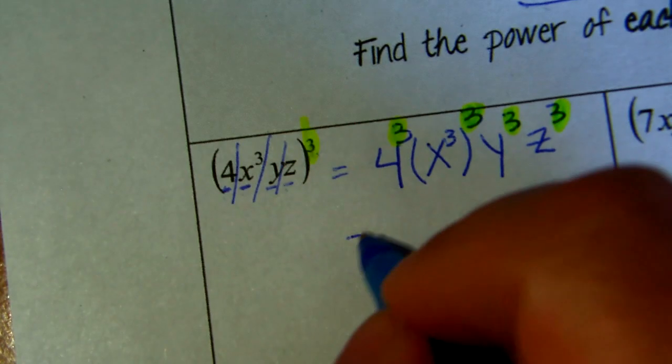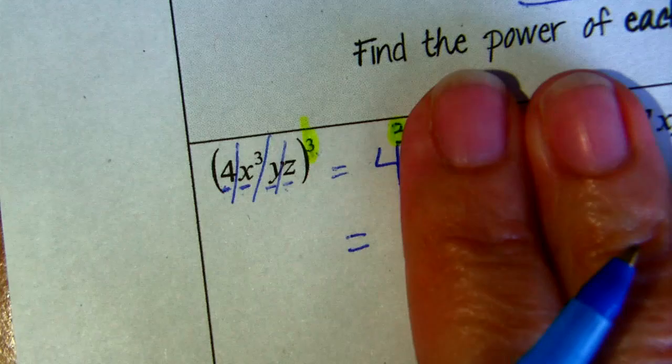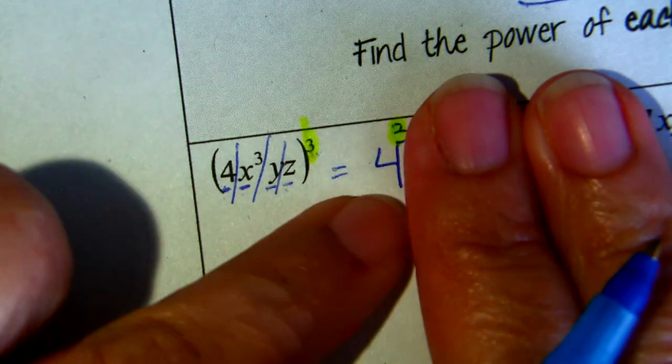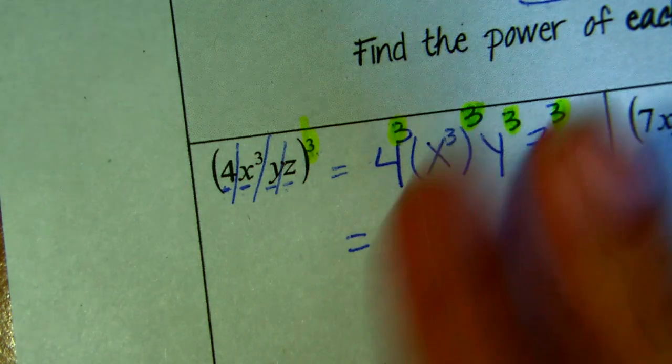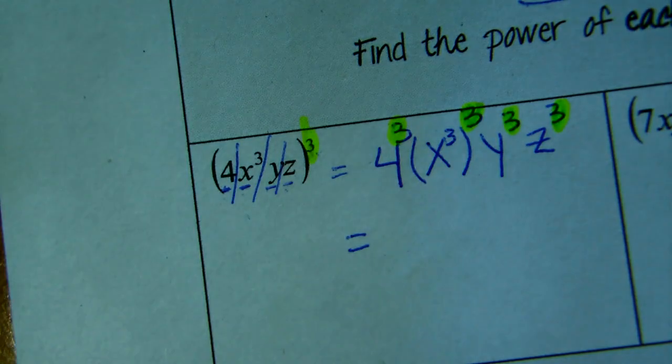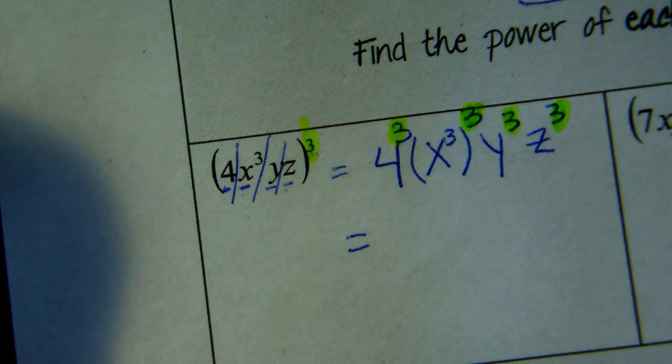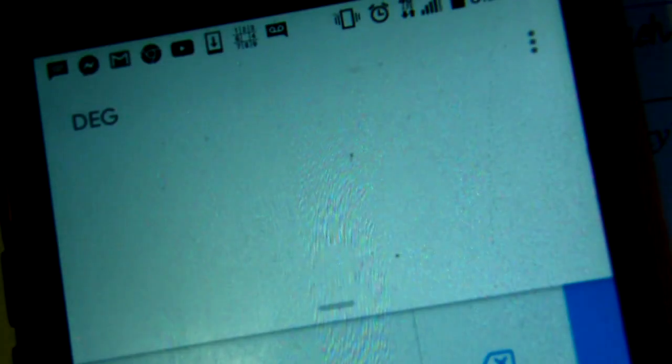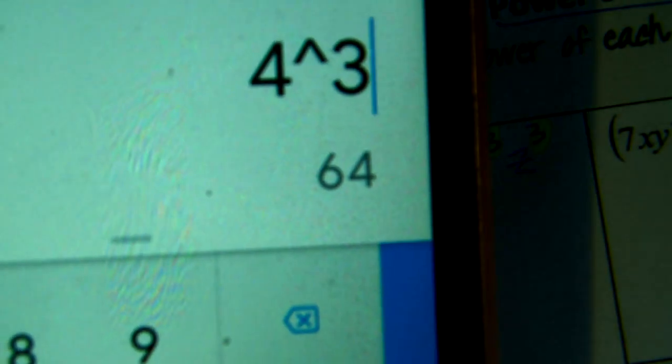So in order for us to simplify, first of all, if we didn't have the letters, what do we see? 4 to the power of 3. So we just do that operation in our calculator. This is my regular phone calculator. So you put 4 raised to the power of 3 and it gives me 64.